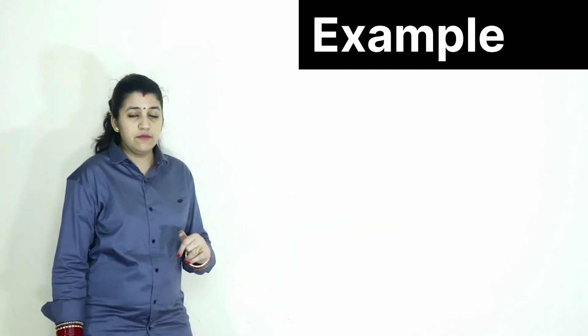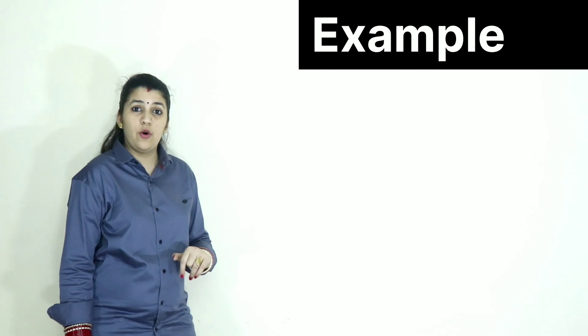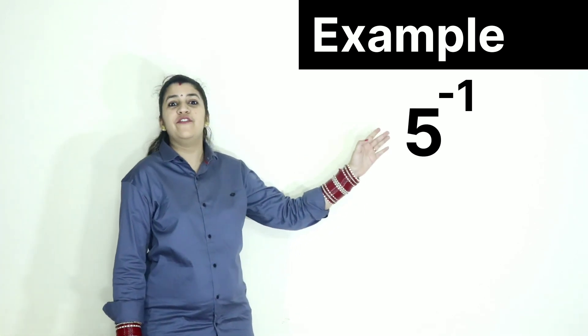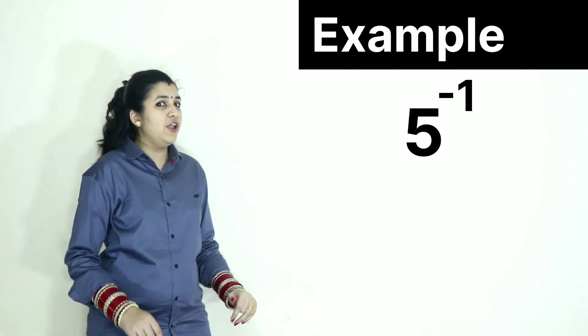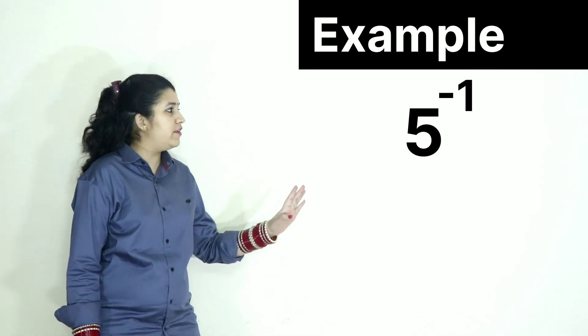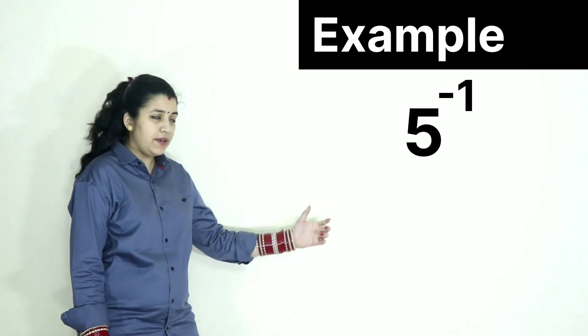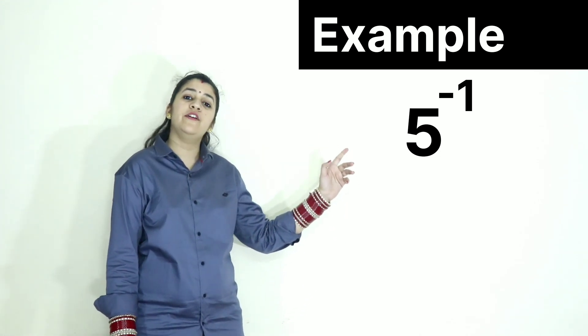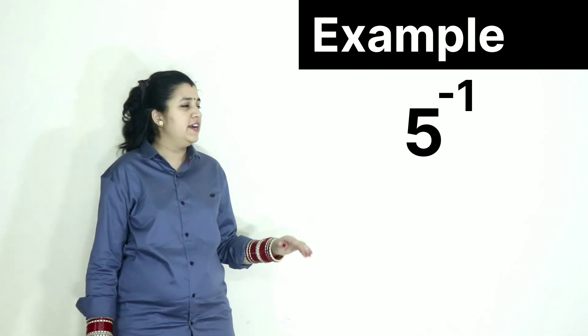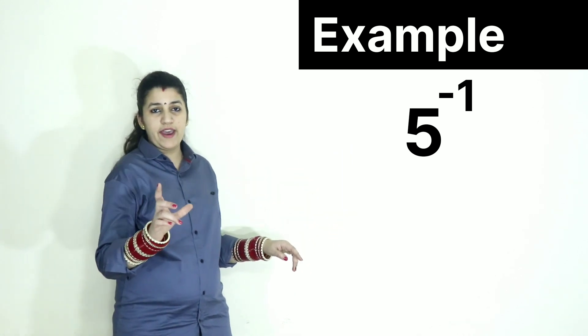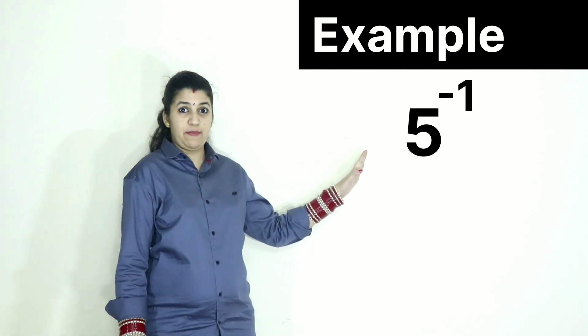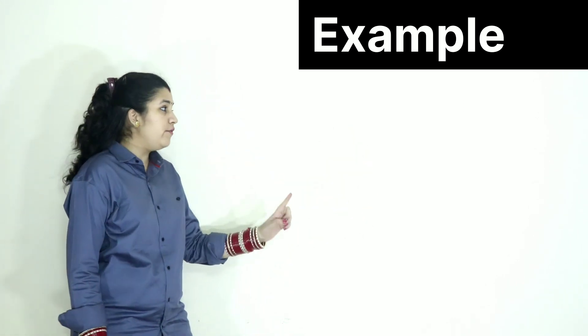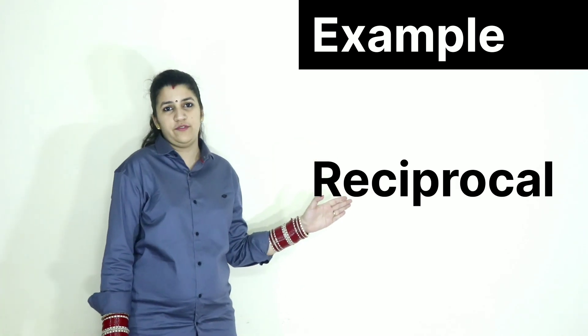Now when the power is negative, what do we have to do? 5 raised to the power minus 1. We all know if a number has power 1, then the answer is the number itself. So if I say 5 raised to the power 1, the answer is 5 only. But if 5 raised to the power minus 1, you have to take the reciprocal of this number.